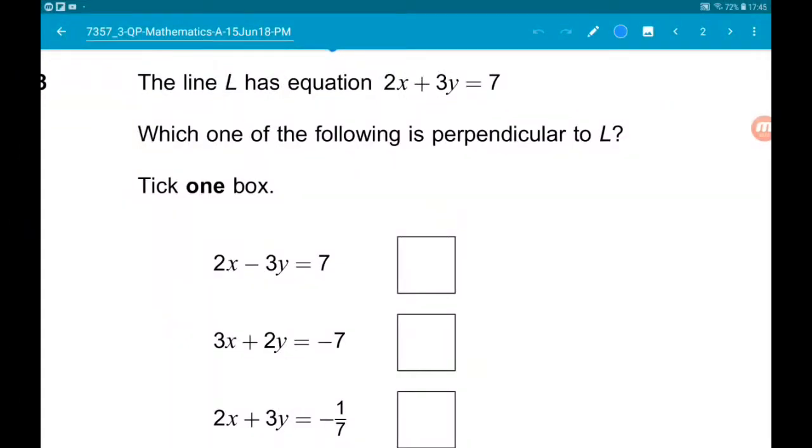Question 3. The line L has the equation 2x + 3y = 7. We're asked which of these equations is perpendicular to L. Tick one box.